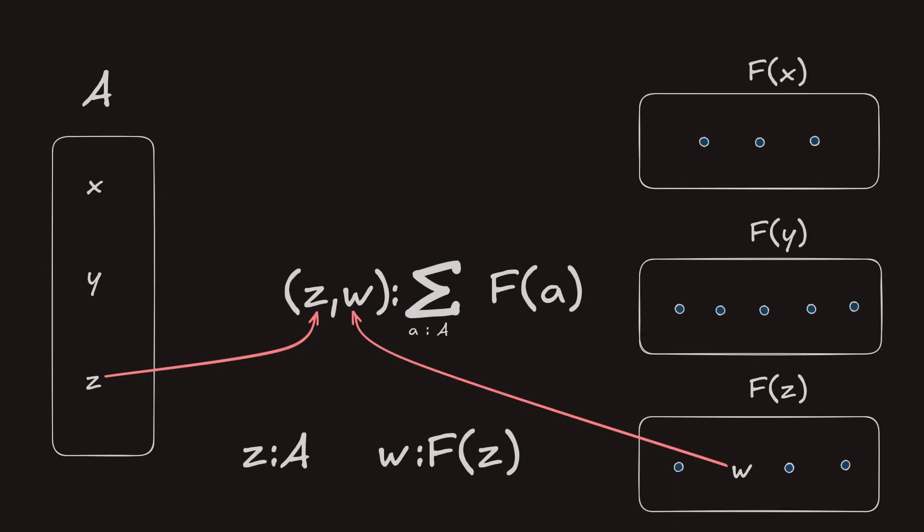In the previous video, we learned about the sigma type and how it generalizes the notion of a pair to that of a dependent pair.